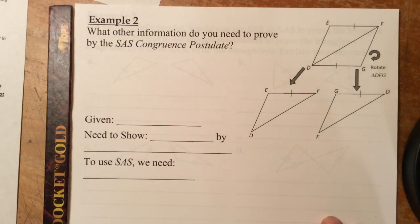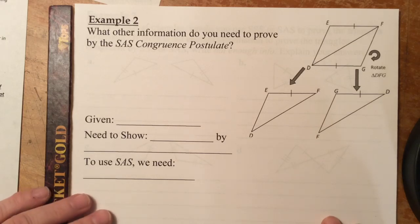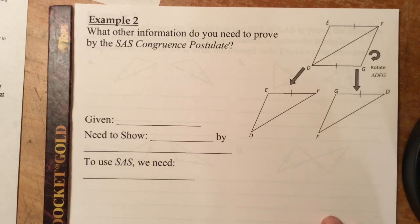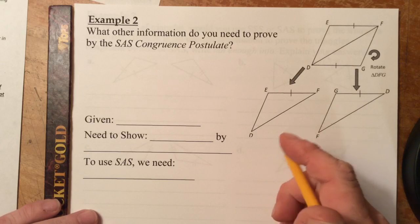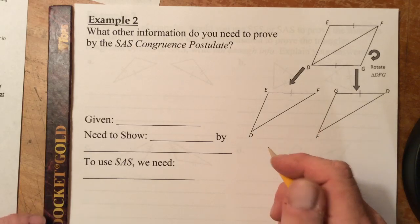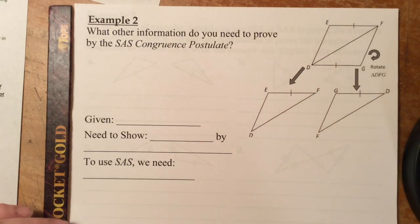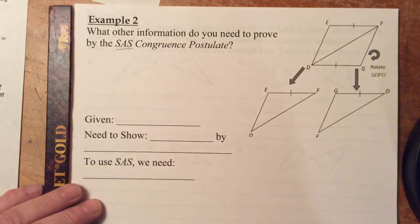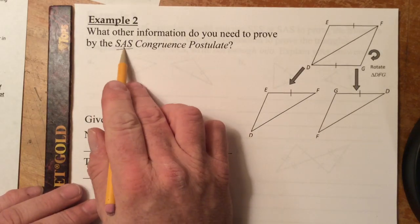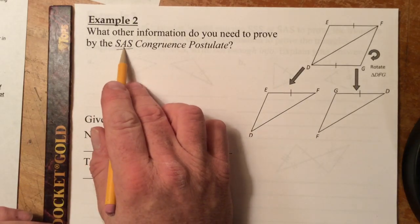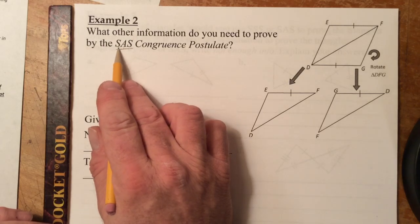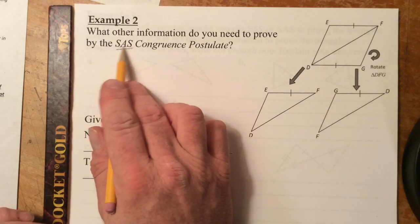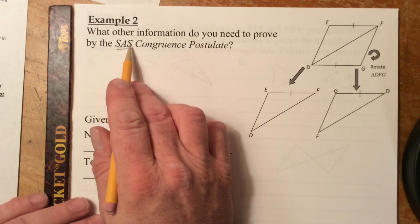Example two. It is important to understand how triangles correspond to each other before planning a proof. The question asks: what other information do you need to prove by the SAS congruence postulate that these two triangles are congruent? Remember — for SAS, the pair of congruent angles must fall between the two congruent sides, i.e., it must be the included angle.